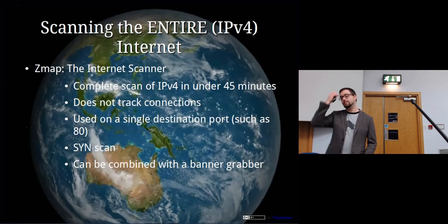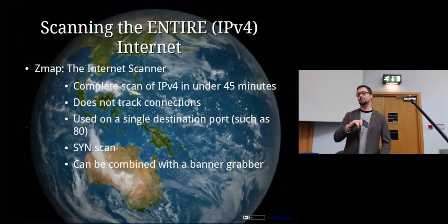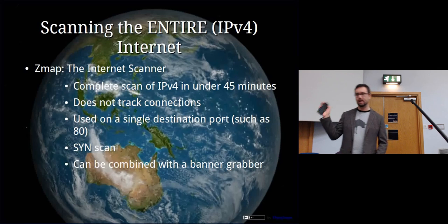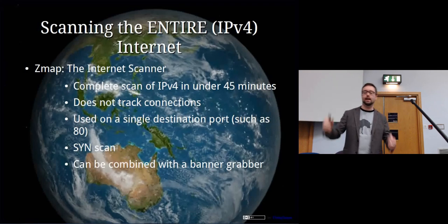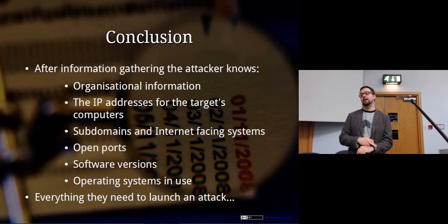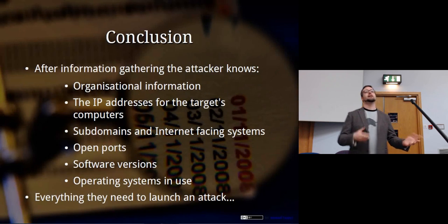ZMAP is something quite recent — about two years ago it was released. The amazing thing about ZMAP is you can do a complete scan of the entire IPv4 internet in under 45 minutes. You can scan on a specific port and find every single web server on the internet in under 45 minutes. It achieves this by not trying to track connections — it just sprays requests out and sees what happens, using one port and a SYN scan. You can combine it with a banner grabber to get extra information. In conclusion, at this point we know organizational information, IP addresses, subdomains, open ports, software versions, and operating systems — basically everything needed to attack the system, which we'll cover next week.